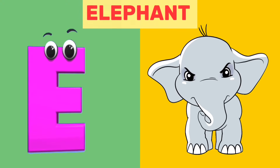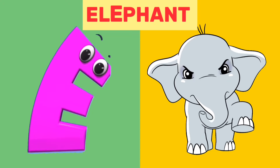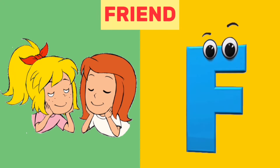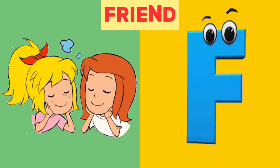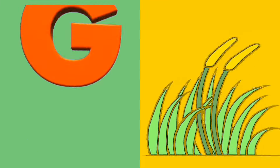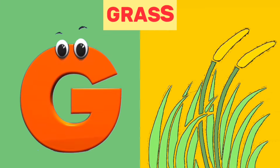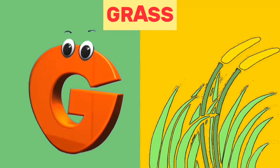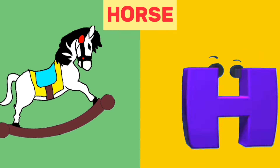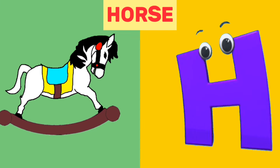E is for Elephant. E, E. Elephant. F is for Friend. F, F. Friend. G is for Grass. G, G. Grass. H is for Horse. H, H. Horse.